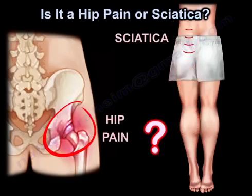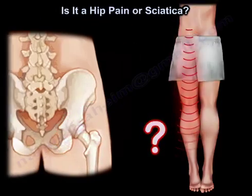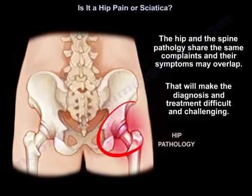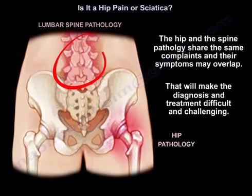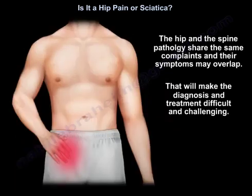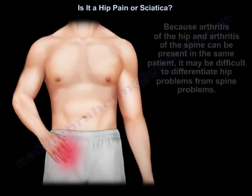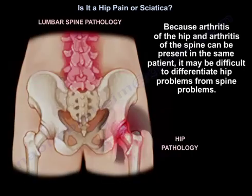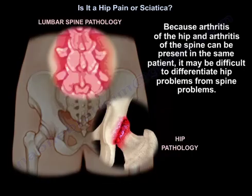Is it hip pain or sciatica? The hip and spine pathology share the same complaints and their symptoms may overlap, making diagnosis and treatment difficult and challenging. Because arthritis of the hip and arthritis of the spine can be present in the same patient, it may be difficult to differentiate hip problems from spine problems.